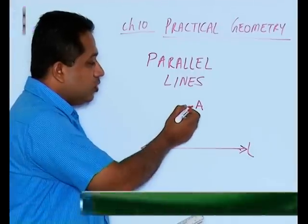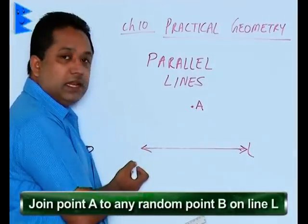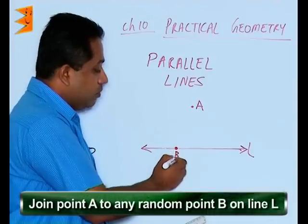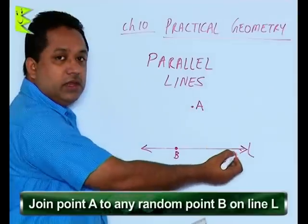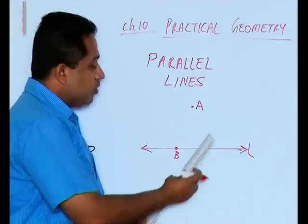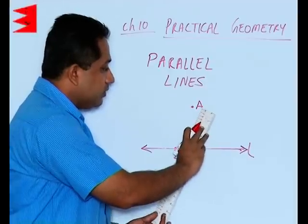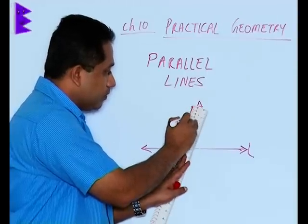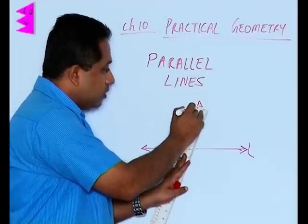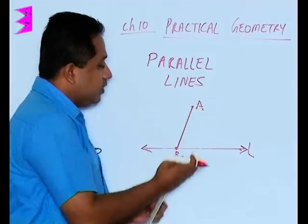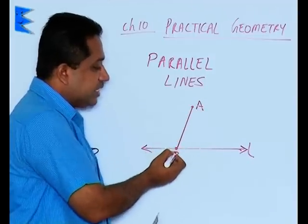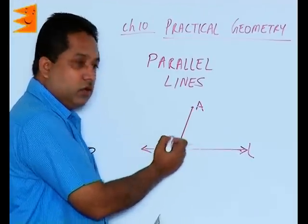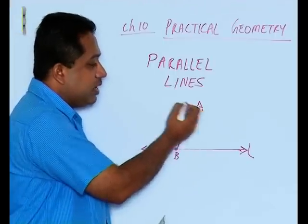Then we can join this point A to any random point on the line L. We can take any point, let us say here we are taking a random point B. This point B could have been anywhere on the line. Next step, we are going to join these two lines. The points A and B are going to be joined here. You are going to get a line segment that will start from A and end with B, or you can say starts with B and ends with A.